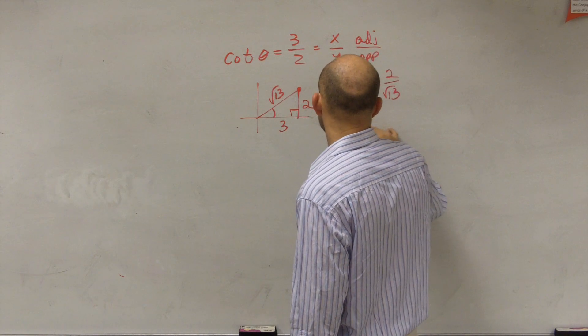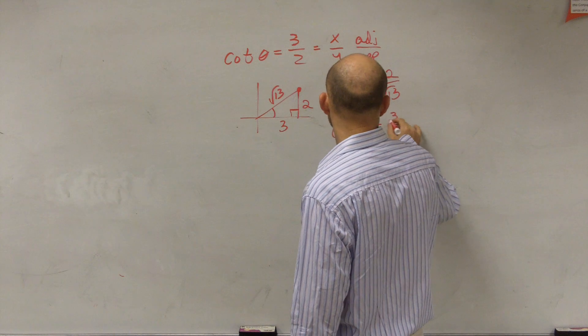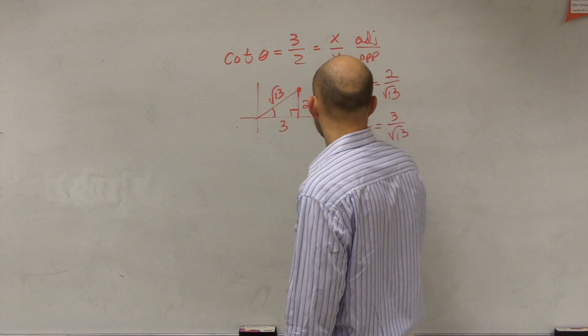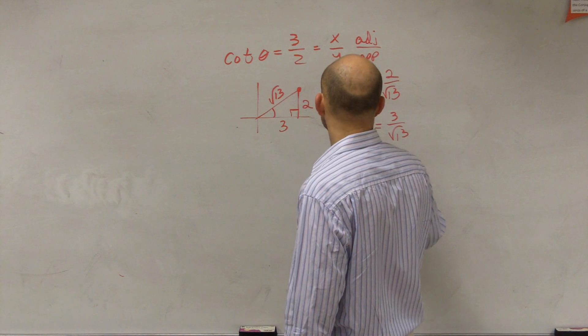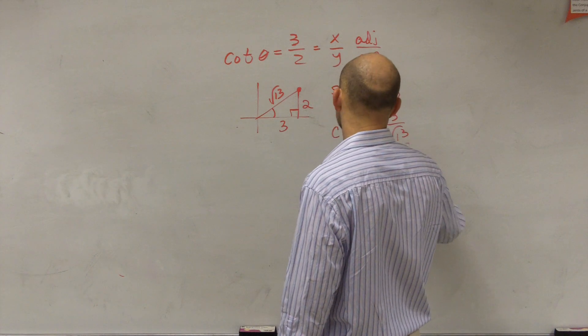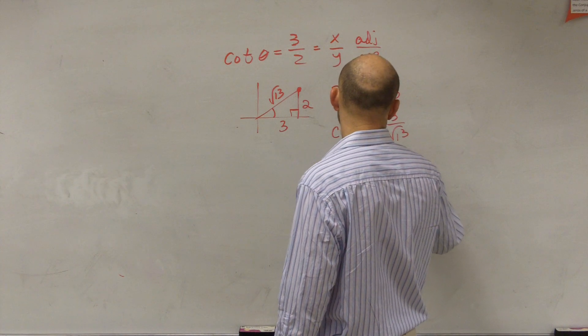Cosine, I'll get to the rationalizing here in a second. Cosine is going to be 3 over square root of 13. And tangent of theta is going to be reciprocal of that, which is going to be opposite over adjacent, which is 2 over 3.